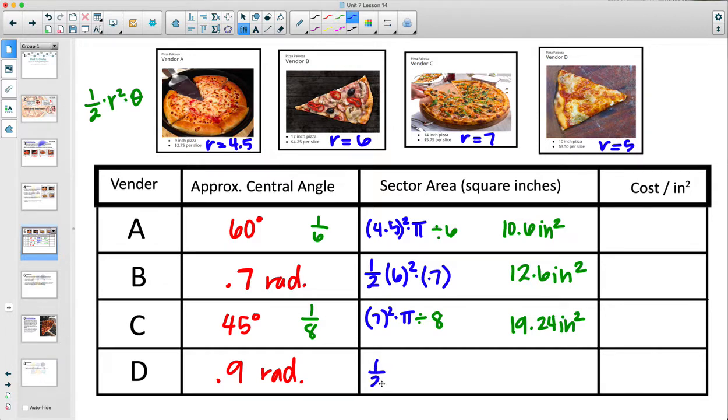We're going to do 1/2 times the radius squared, so this radius was 6 squared. And then we're going to multiply by the radian measure of 0.7. So 0.5 times 36 times 0.7 gives us 12.6 inches squared for the area of that sector. This one, we'd have 1/2. The radius of this one was 5, so 5 squared. And then times the central angle of 0.9, again using this formula. So we'd have 0.5 times 25 times 0.9, and end up with about 11.25 inches squared worth of pizza there.